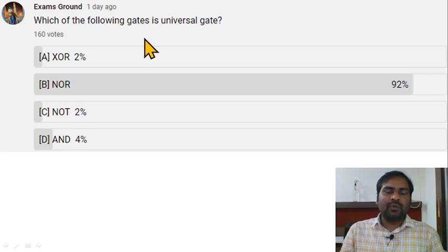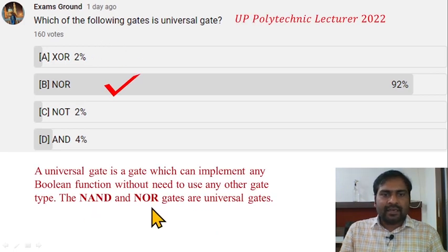Which of the following gates is a universal gate? NAND and NOR gates are universal gates. Option B is correct here: NOR gate.